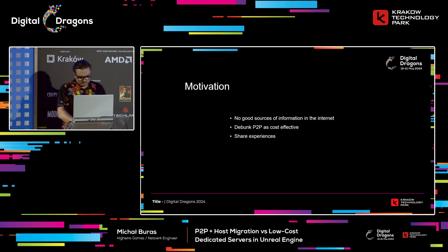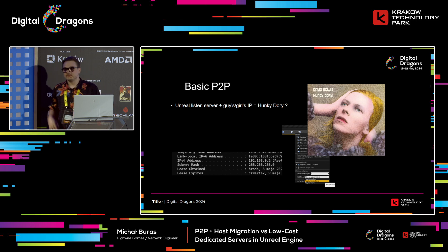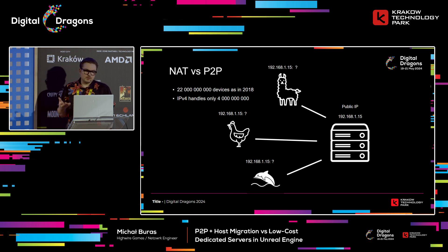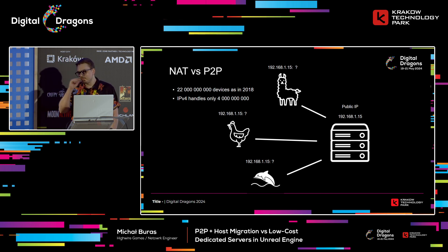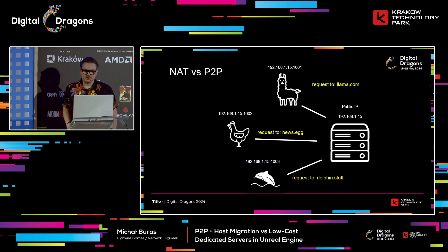I wanted to debunk peer-to-peer as cost-effective and share my experiences so you don't have to make the mistakes I did. So, basic peer-to-peer: we all know the Unreal listen server. You might imagine it's easy to make a peer-to-peer game because you've got some other guy's IP, but in real life it's not that simple. There's no such thing as your own private IP — you share the output node of your internet service provider, so all people in your apartment block have more or less the same public IP.